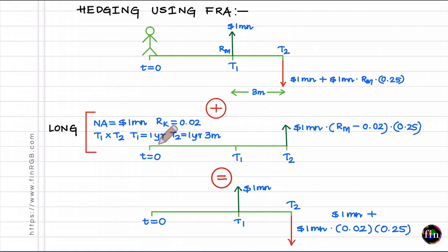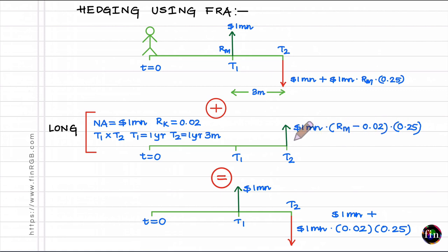In a long position I'll be receiving R_M and paying out the fixed rate R_K. So net net, my payoff from this FRA would be: notional 1 million dollars times (R_M minus 0.02) times the period 0.25 years. As per market convention for FRAs, you receive the discounted value of this payoff at time T1 itself — discounted at R_M. However, let's ignore that convention for this analysis and assume you get the payoff at T2.